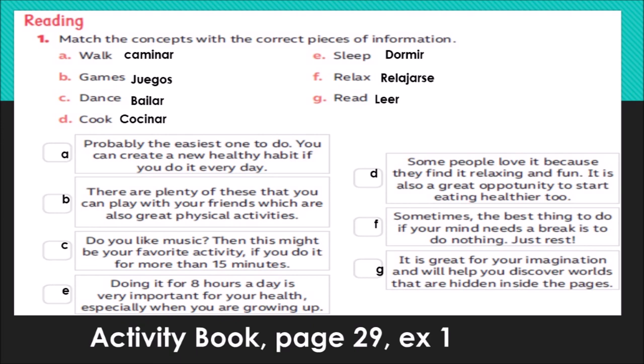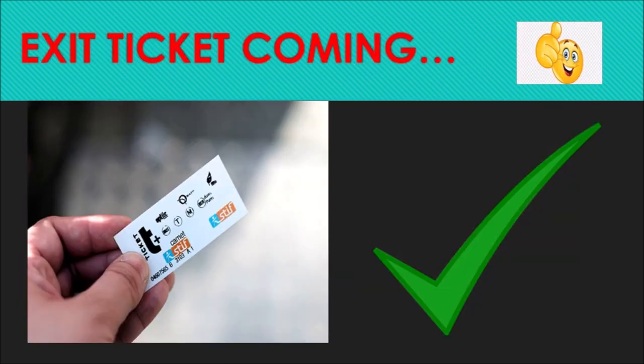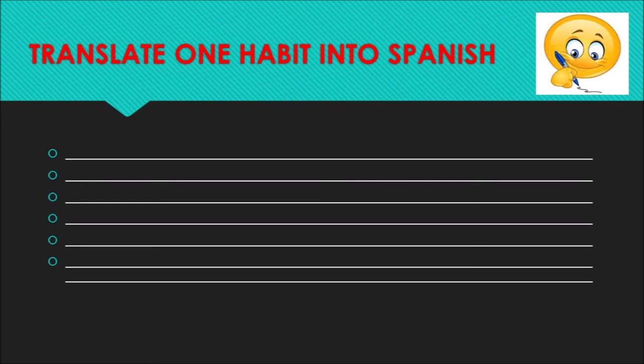Very good. Next activity — exit ticket coming. Ya llegamos al ticket de salida. Dice: translate one habit into Spanish. Aquí tienes que traducir un hábito saludable de los que recién vimos — elige el que más te guste y ponlo en español en el espacio del ticket de salida. Okay, my students, that's all for now. Thanks for watching. See you next week here on YouTube. Bye bye, take care.